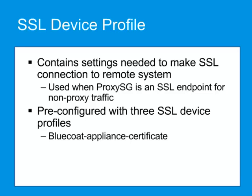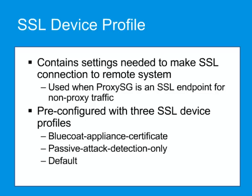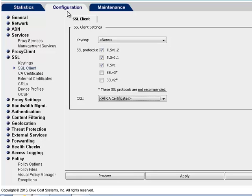The Bluecoat Appliance Certificate, which cannot be edited or deleted, is used for device-to-device authentication, allowing Bluecoat devices on a network to identify other Bluecoat devices that can be trusted. The passive attack detection only profile, which cannot be edited or deleted, optionally can be used in place of the Bluecoat Appliance Certificate profile. The passive attack detection only profile uses a self-signed certificate and disables the verify peer option, so that no authentication is done on the endpoints of the connection. The traffic is encrypted, but is vulnerable to active attacks. The default profile can be edited, but not deleted. Only secured non-proxy traffic uses this profile. Additional profiles with different settings can be created.